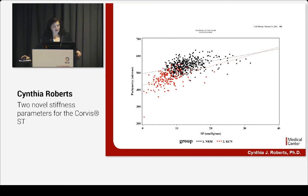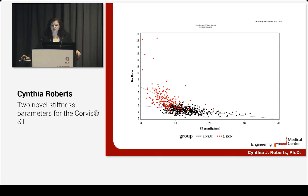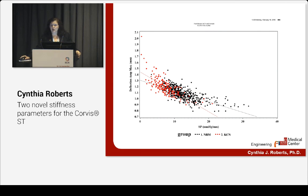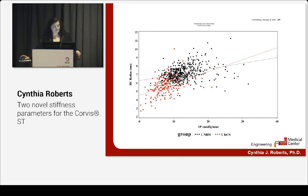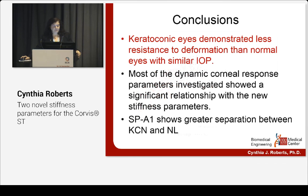Looking at a couple of regressions: pachymetry — the red dots are keratoconus, the black dots are normal eyes. Stiffer eyes have greater pachymetry in both groups. The DA ratio shows stiffer eyes have lower values because they're more resistant to deformation, while softer eyes have higher DA ratio, peaking prior to first applanation. Deflection amplitude shows stiffer eyes have lower amplitudes. Radius shows stiffer eyes have higher radius of curvature, meaning they're flatter. In conclusion, keratoconic eyes demonstrated less resistance to deformation than normal eyes with similar IOP, and most dynamic corneal response parameters showed a significant relationship with the stiffness parameter. A1 shows greater separation between keratoconus and normal.